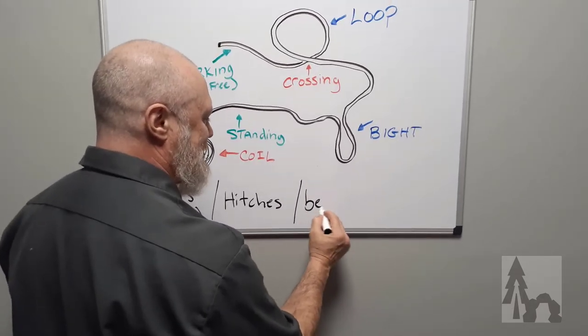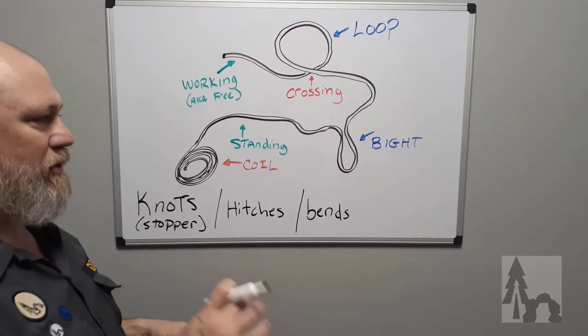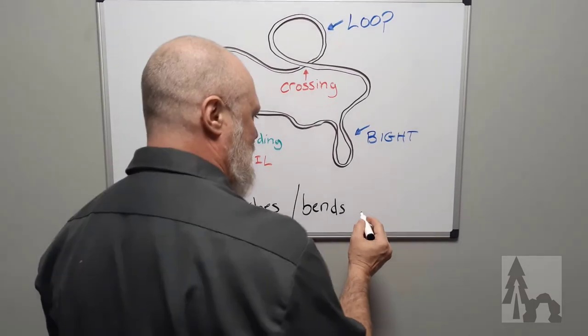We're going to tie some bends. Bends are going to be when we attach the rope to another rope - different ways to tie those type of knots.